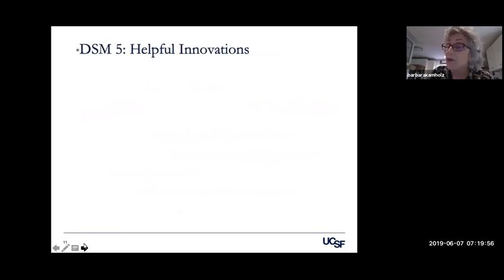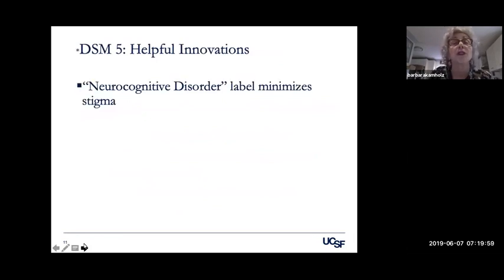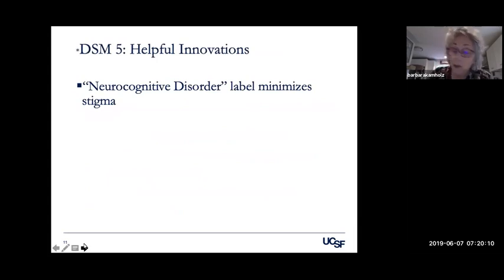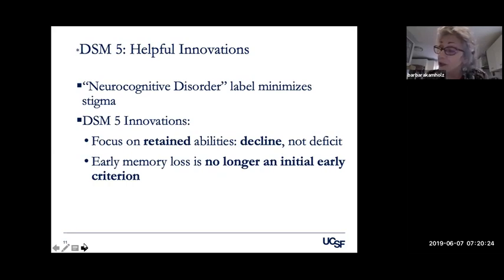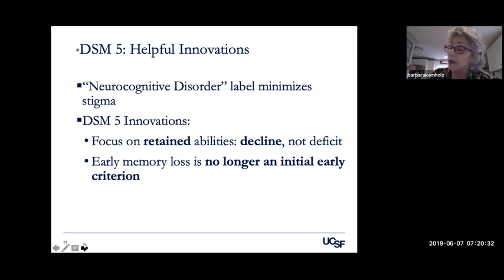DSM-5 provides some helpful innovations. Relabeling to neurocognitive disorder minimizes stigma, although in places with low health literacy the term will of course be confusing. DSM-5 emphasizes retained abilities instead of deficits, themselves redefined as declines — this helps everyone understand that the person still retains value and demands respect. Also important is that early memory loss is no longer an initial criterion, given the vagueness of the term.